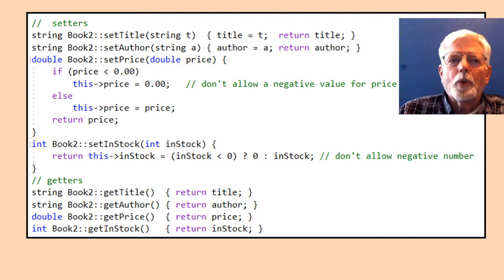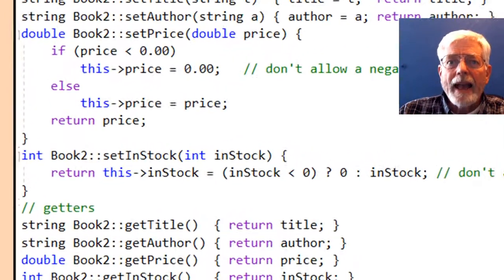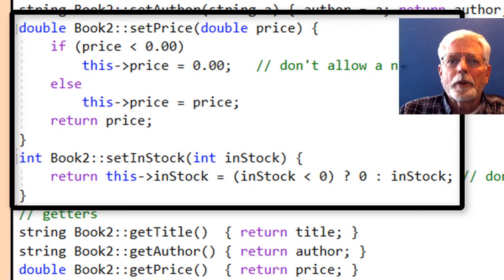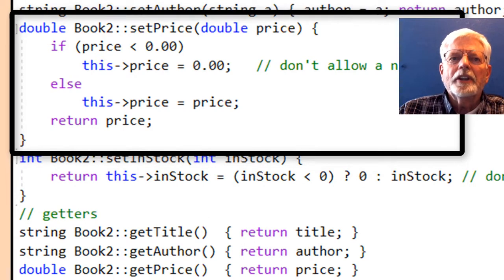But I am going to add some extra code when working with the price and in-stock member variables. I don't want the setter methods for these variables to accept negative values.